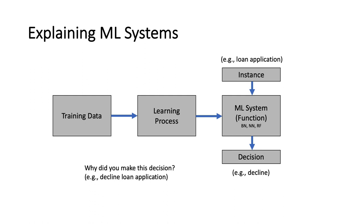What we'd like to do is reason about the behavior of this numeric box. The fundamental observation underlying our work is that even though these boxes have been learned from data and are numeric, they often do implement discrete decision functions. So what we'd like to do is capture those discrete functions symbolically and then reason about them symbolically.